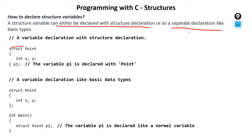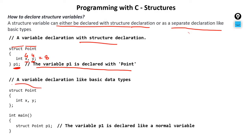In the first method, we create a structure named 'point' with two members X and Y (each 4 bytes, total 8 bytes), and declare variable P1 right there with the structure. In the second method — separate declaration — we first create the structure without any variable, then inside main we write 'struct point P1' to create the variable. Both methods are exactly the same; there is no difference between them.